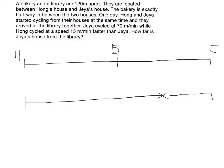They arrived at the library together. This point is where the library is. The speed of JS is 70 meters per minute. The speed of Hong is 70 meters plus another 15 meters per minute because he is 15 meters per minute faster than JS, so he'll be cycling at 85 meters per minute.